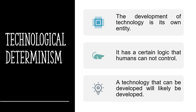One of the oldest theories about technology is technological determinism. Technological determinism believes that the growth of technology is an independent entity. This entity has a logic that it operates by, and humans cannot control this logic in any way. In summary, technological determinism believes that any technology that can be developed will be developed, regardless of human intervention.